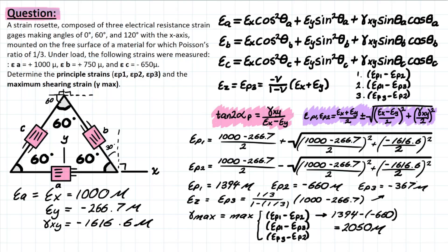And when you go ahead and solve that, you're going to be left with a value of negative 367. And then we can take all three of these principal strain values and determine what our maximum shearing strain is going to be based on the output from the three different scenarios where max shearing strain will occur.